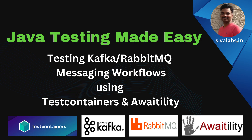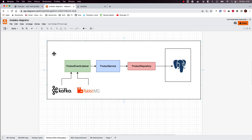Welcome back. In this video we are going to talk about how to test Kafka or RabbitMQ based event-driven workflows using Test Containers and Awaitility libraries. Let us imagine we are building an application where we are consuming messages from Kafka or RabbitMQ, processing them according to business requirements, and finally persisting data into a database like Postgres. The use case is: if I send a message to Kafka, my product event listener should consume that event, process it, save the data into Postgres, and I want to verify that the expected data is there in the database.